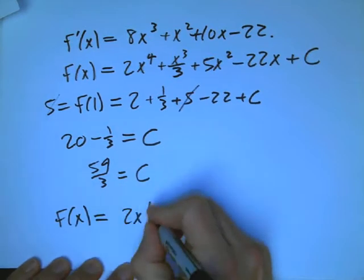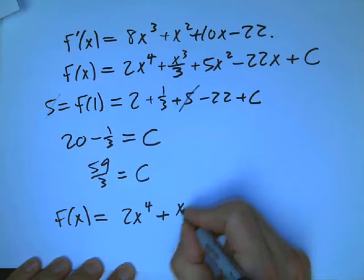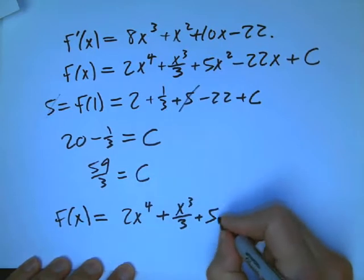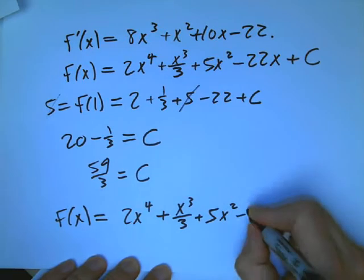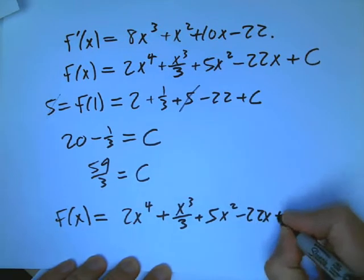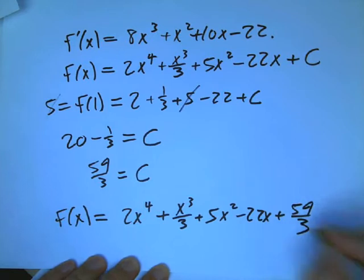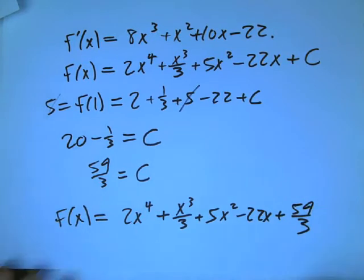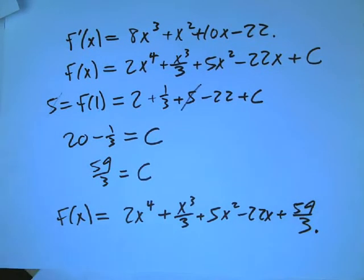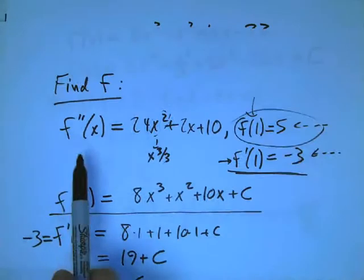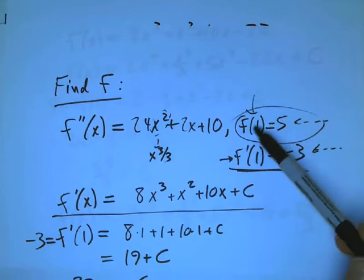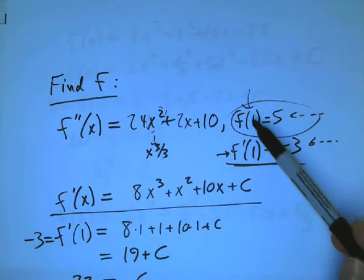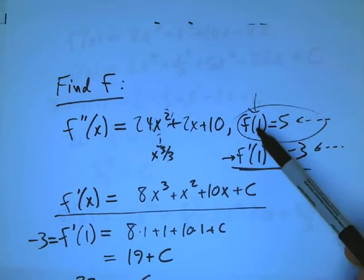Our mystery function, that the only thing we were told about it was information about its second derivative and a couple of values, just one value for the function and one value for the derivative. We nailed it down. This is a very typical thing. If you start out with two derivatives, and you give me the starting value, and this x here could be anything, and it doesn't have to be the same for both, although it often is. If you just give me one value of the function and one value of the derivative, we'll be good.